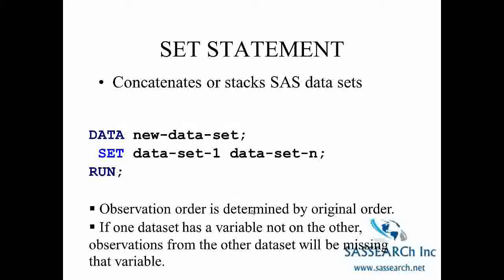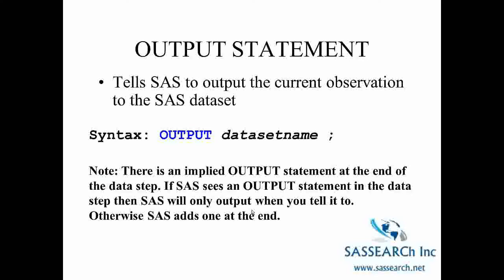Another useful statement when combining or subsetting SAS datasets is the OUTPUT statement. The OUTPUT statement tells SAS to output the current observation to the SAS dataset. The basic syntax is just 'output' followed by the dataset name. Note that there is an implied output statement at the end of the data step. If SAS sees an output statement in the data step, SAS will only output when you tell it to. Otherwise, SAS outputs the observation when it reaches the end of the data step.